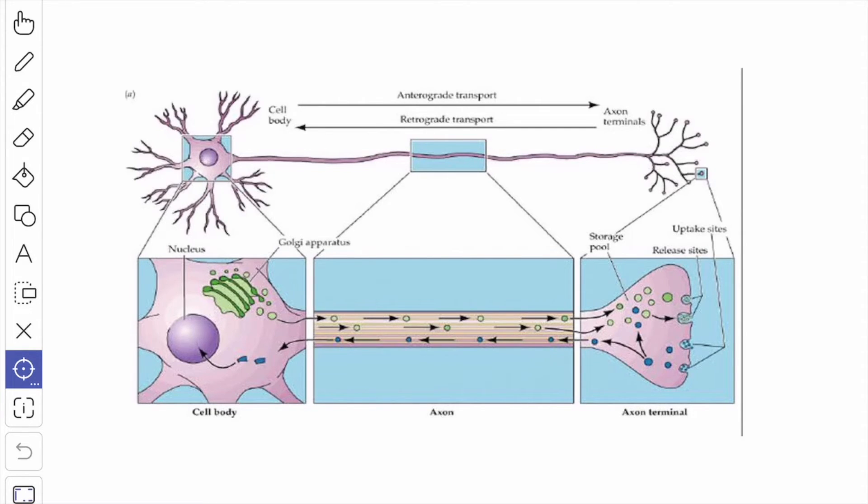Mitochondria appear in the axoplasm in intermittent spurts. The retrograde transport permits the worn-out mitochondria and the segments of the plasma membrane to return rapidly to the cell body for degradation by the lysosome.